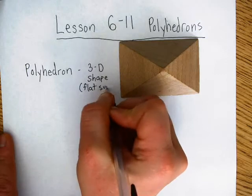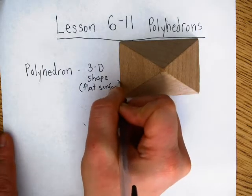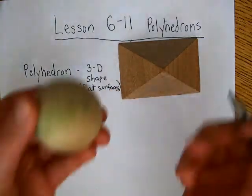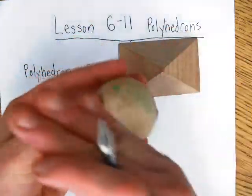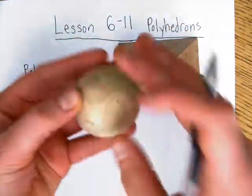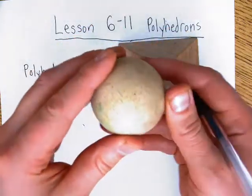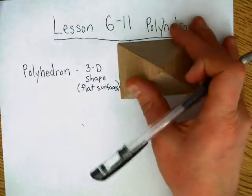If we want to look at something that is not a polyhedron, the sphere would be an example, because the surfaces are not flat — you can see they're round.